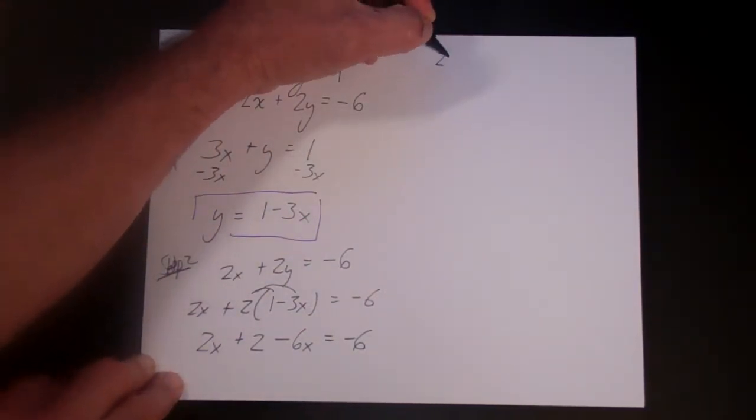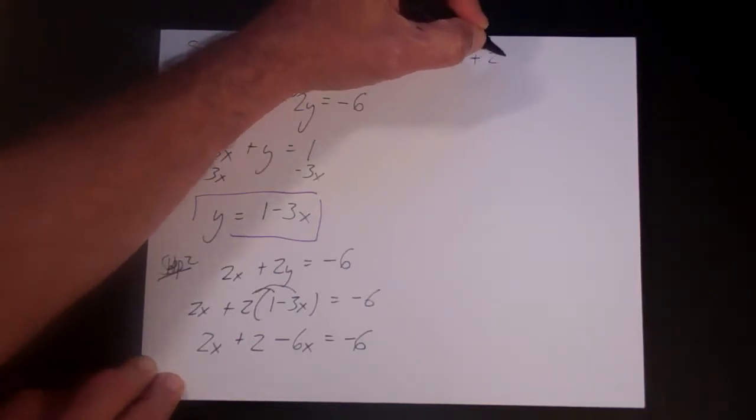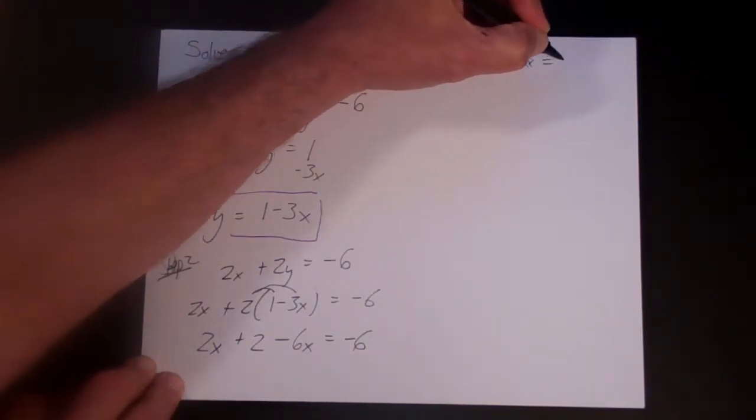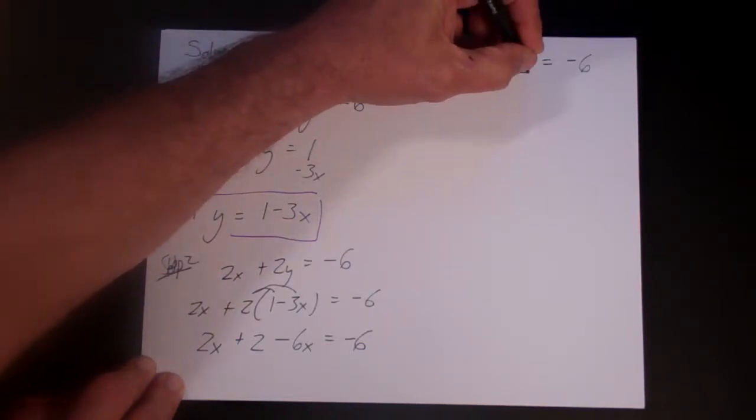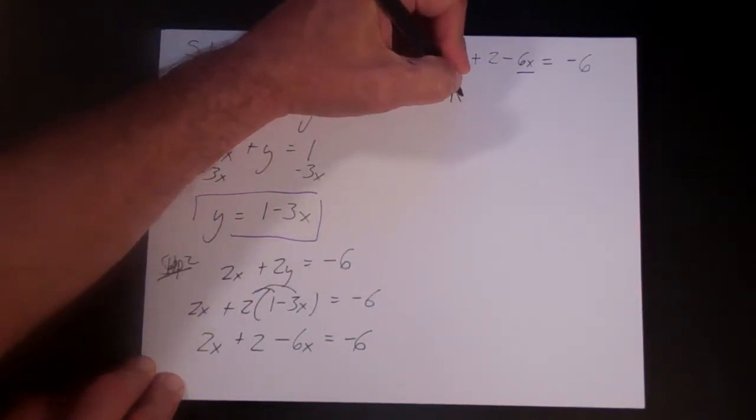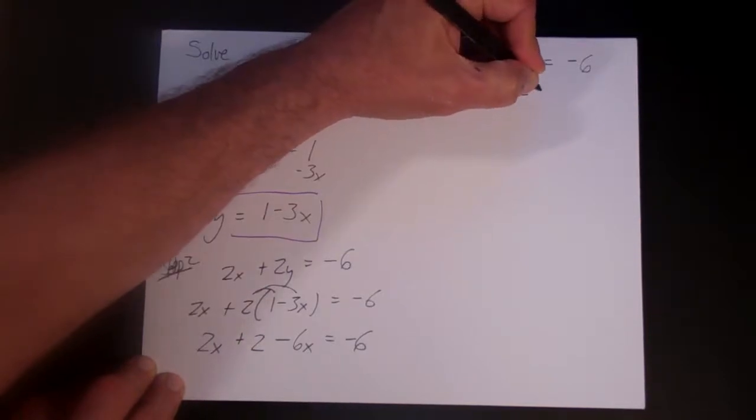Now let's solve this. I'm going to rewrite it up here. 2x plus 2 minus 6x is equal to minus 6. Let's combine like terms. So that's minus 4x plus 2 is minus 6.